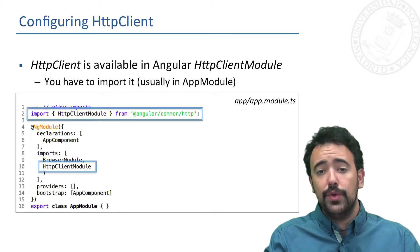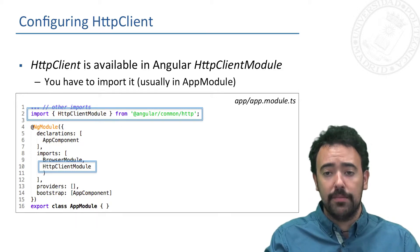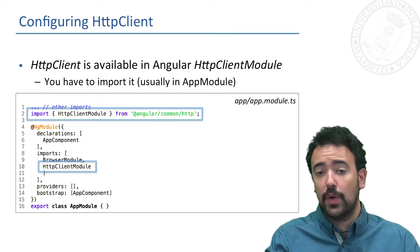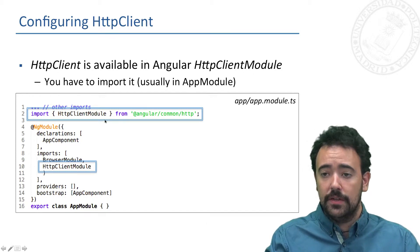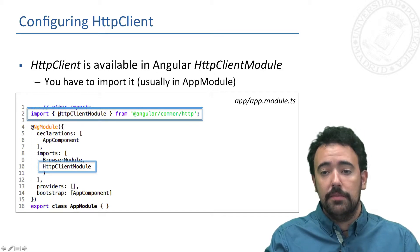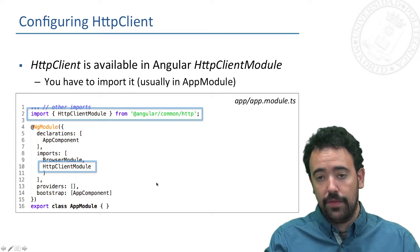In order to use this HTTP client we have to import the HttpClientModule, as we usually do in Angular. This is done in the application module file, importing the module and then including it in the list of imports of the module.